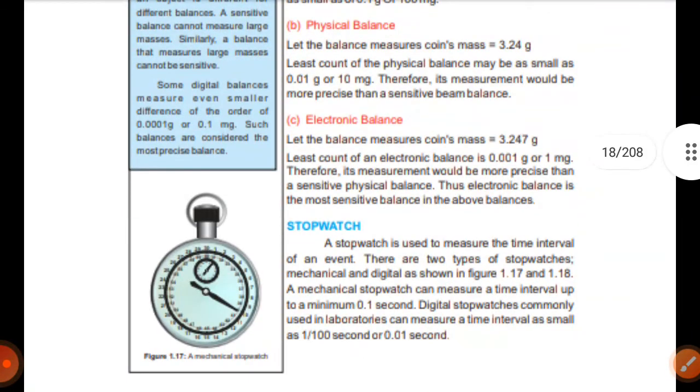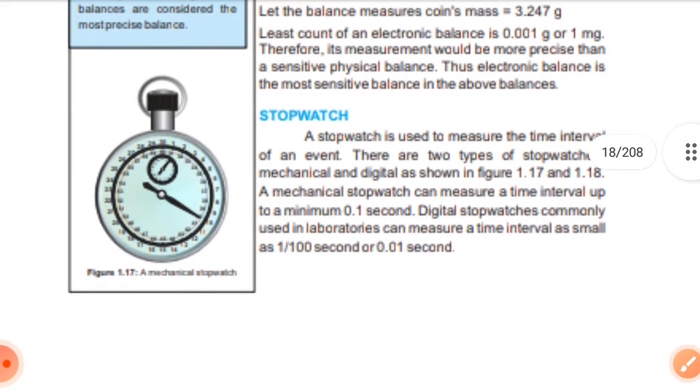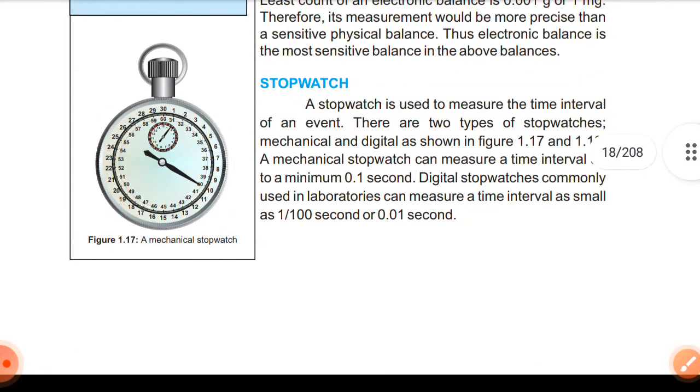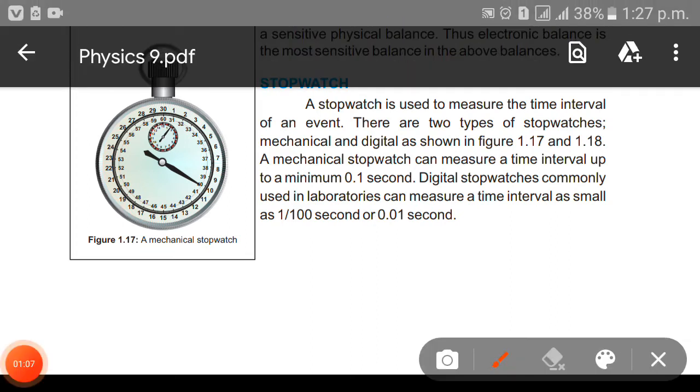Today we are going to start the next physical property which is time. For time measurements we normally use stopwatch to measure the time. If we want to check the time duration of how much time we are consuming, the appropriate method is by using a stopwatch. Let's start today's topic.